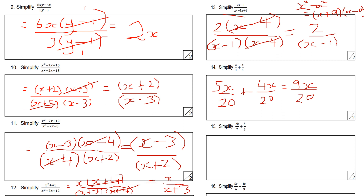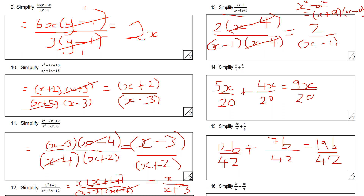This next one: find the lowest common multiple of 7 and 6, which is 42. Cross-multiplying: 6 times 2b gives 12b, and 7 times b gives 7b. Simplifying the top: 7b plus 12b equals 19b. So the answer is 19b over 42.